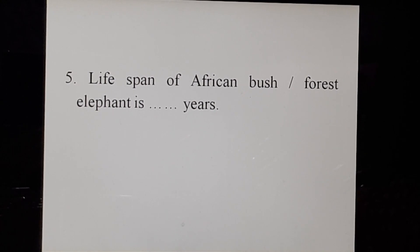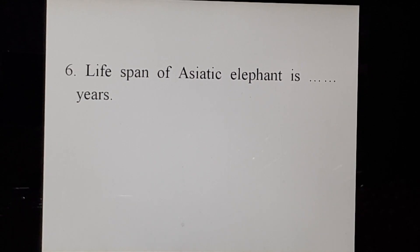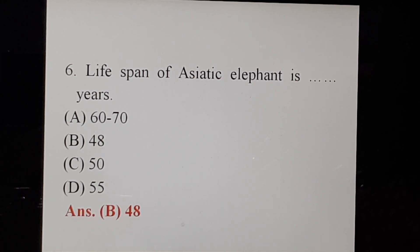Question 5: Lifespan of African bush or forest elephant is blank years. A: 60 to 70, B: 48, C: 50, D: 55. Correct option is 60 to 70 years. Note: lifespan of African and Asiatic elephants are different, so I have mentioned them separately.